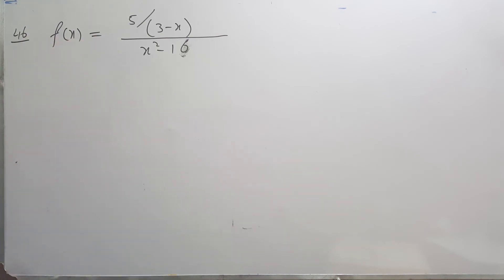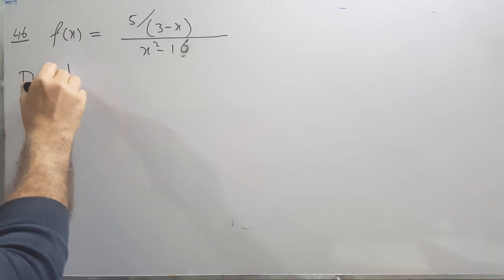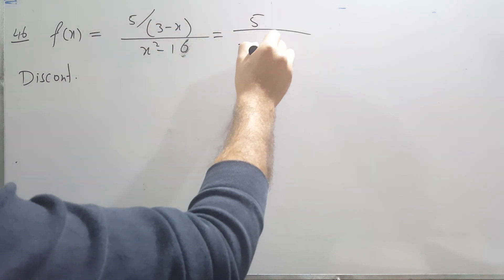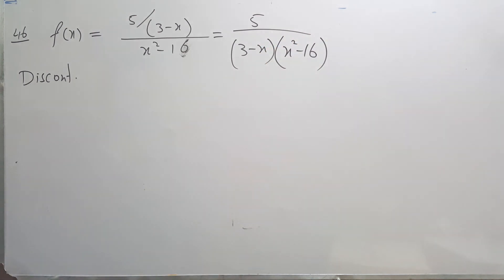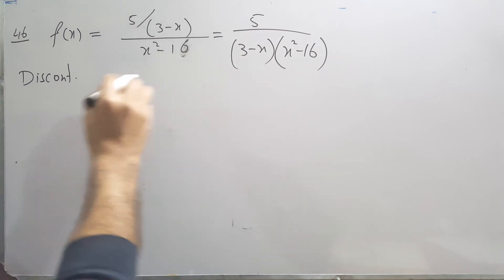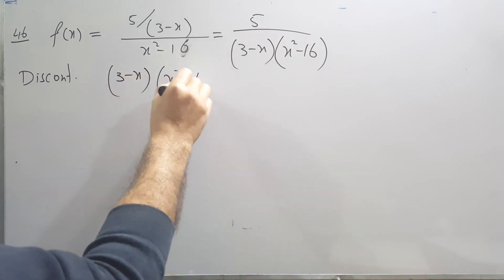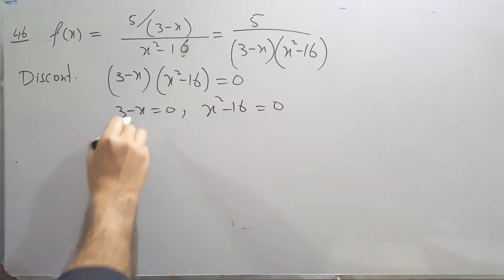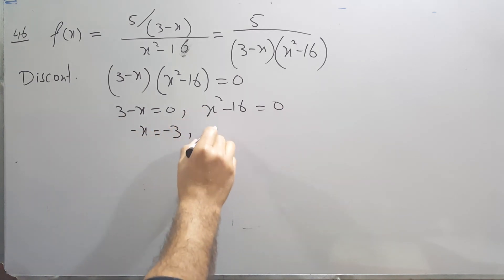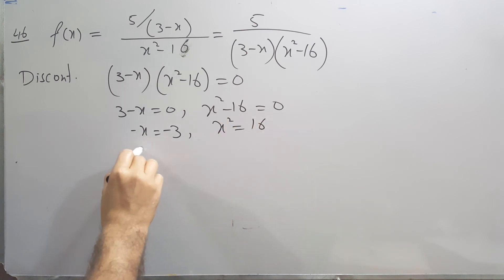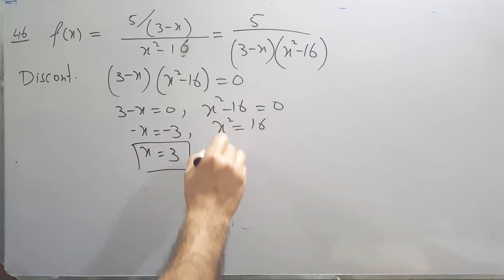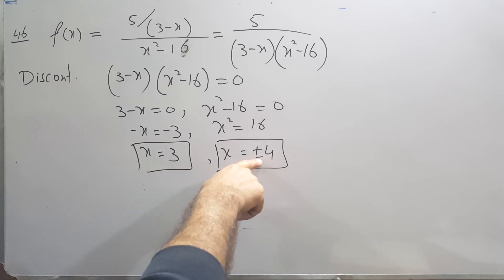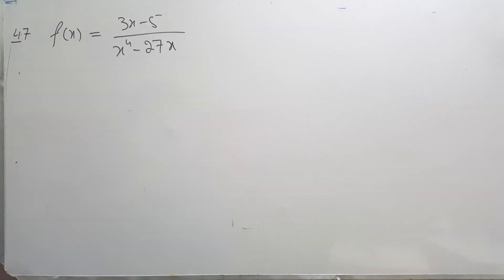Questions 45 and 46 are similar; solving question 46. The general form simplifies so the denominator becomes (3 minus x)(x² minus 16). Setting each factor to zero: 3 minus x equals zero gives x equals 3, and x² minus 16 equals zero gives x equals plus or minus 4. So there are three discontinuity points: x equals 3, x equals 4, and x equals negative 4.